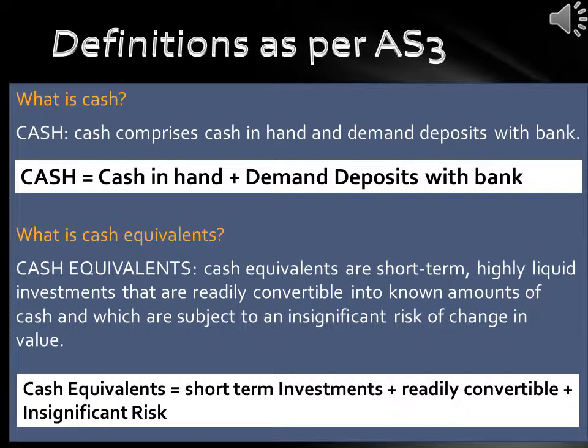Definitions as per AS 3. What is cash? Cash comprises cash in hand and demand deposits with bank. So: Cash = Cash in Hand + Demand Deposits with Bank.